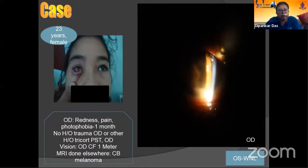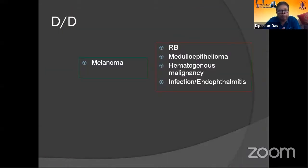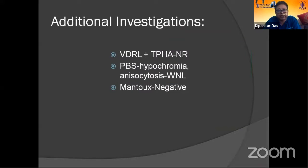A 23-year-old female presented with redness, pain, and photophobia for one month. There was no history of trauma in the right eye. There was history of a triamcinolone injection given in 2015. The vision in the right eye was counting fingers at one meter. MRI done at Shillong, Meghalaya showed a ciliary body melanoma. In the clinical picture, you can see hypopyon, and there was also scleritis. B-scan ultrasound showed a ciliary body mass, and T1-weighted and T2-weighted images in axial and sagittal sections of MRI showed ciliary body involvement. For differential diagnosis, melanoma was considered, as well as retinoblastoma, medulloepithelioma, hematogenous malignancy, and infectious endophthalmitis. Infectious panel was normal.